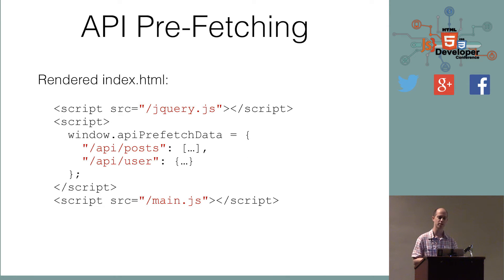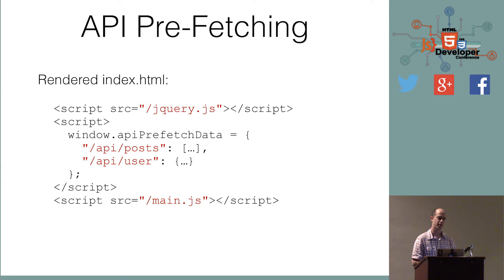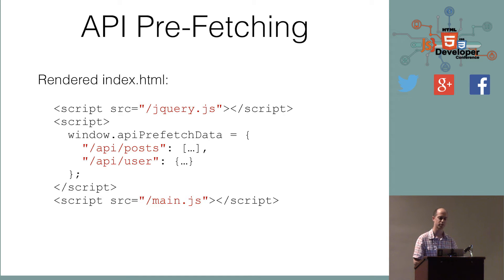How would this work code-wise? This is kind of what a rendered response from the server would look like — a snippet from the index HTML. It would have your standard library at the top, like jQuery or Angular. But there's an extra script tag where we add a global variable called API prefetch data, and in there it defines the JSON responses of API calls you're going to make. The server knows that your Angular app is going to call slash API slash user to get the currently logged-in user's name, or slash posts to list all the posts. So if it knows it's going to make that request in the future, it prefetches it and renders it right into that script tag.